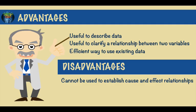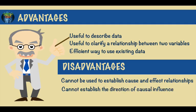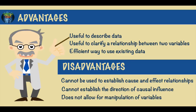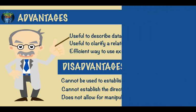On the other hand, this type of research cannot be used to establish cause and effect relationships, nor can it be used to establish the direction of a causal influence. And unlike the scientific method, the correlational method does not allow for the manipulation of variables.